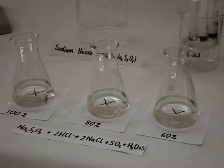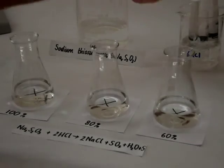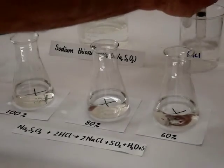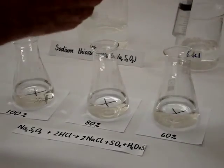We will see as an indicator of the rate of the reaction how much time it takes for us no longer to be able to see the cross looking through the solution. So we now add some hydrochloric acid simultaneously to all of these three. One, two, three.